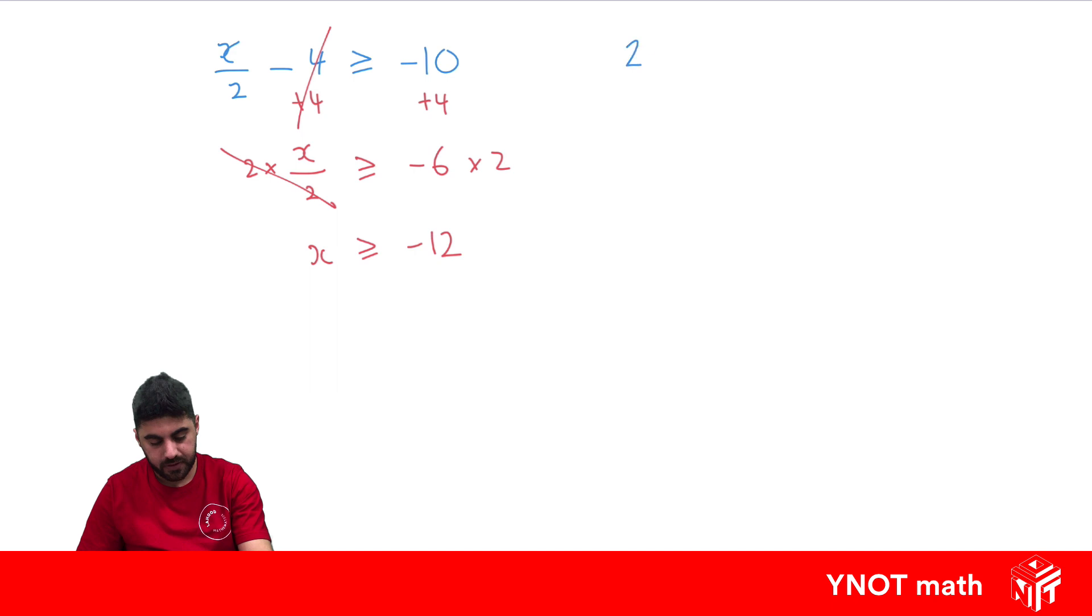What about this one? 2x plus 7 is less than or equal to 6x plus 3. So again, we just want to solve like we do a normal equation. So we've got pronumerals on both sides. So let's bring them together, like taking the smaller one over to the bigger one.